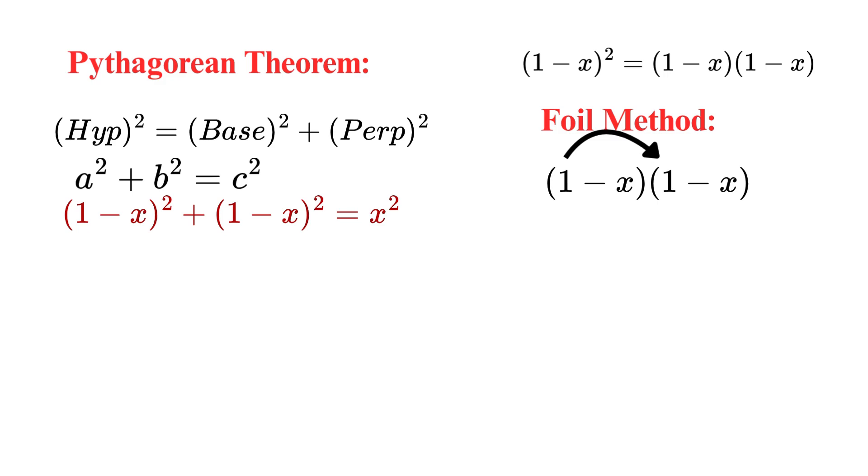Look, this one is multiplied with this term, and that is 1. 1 times 1 equals 1. Multiply this one with the second term, and it becomes 1 times minus x equals minus x. Now, multiply the second term with the first term. That is, minus x times 1 equals minus x. Now, multiply minus x with minus x. Remember, negative times negative gives us a positive. So, we get positive x². Let's add all of these together. So, (1 - x)² = 1 - 2x + x².